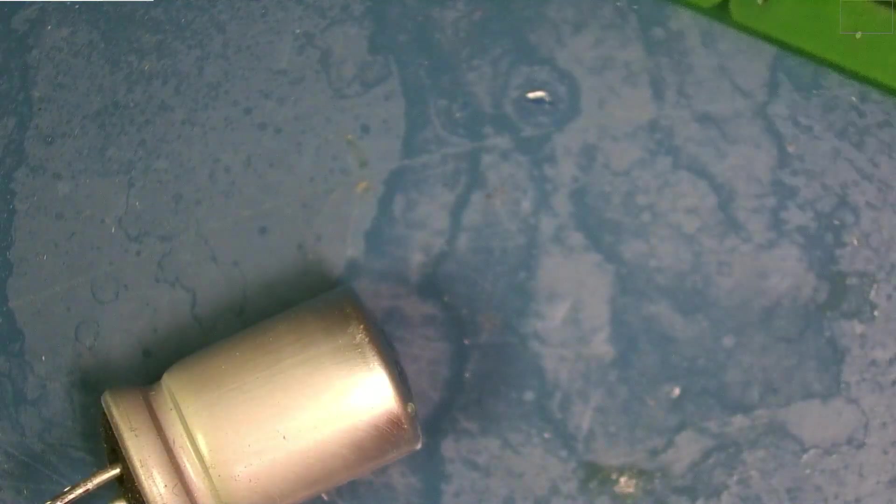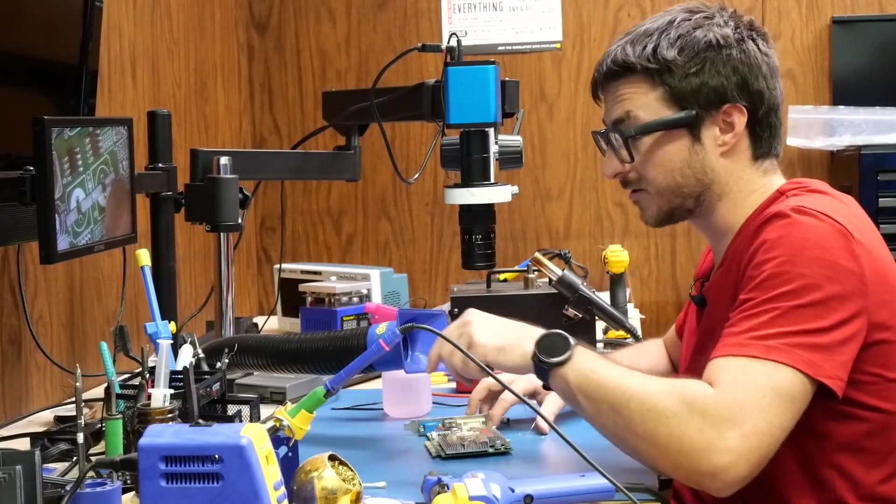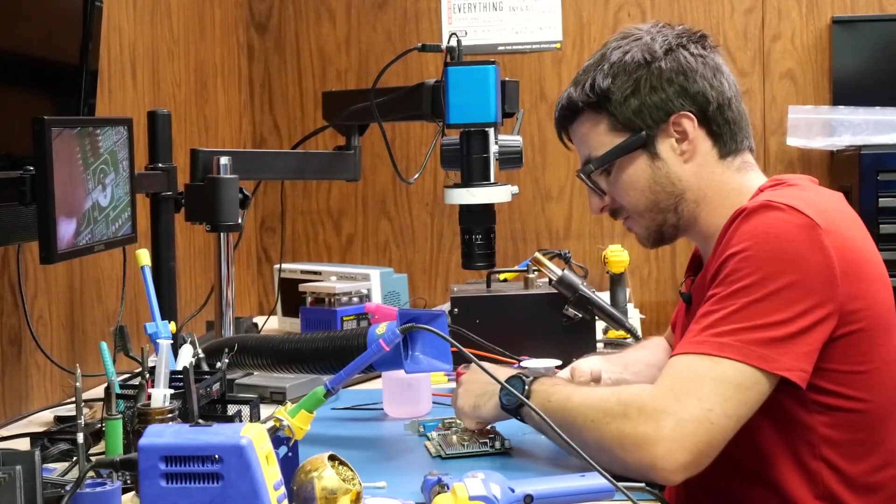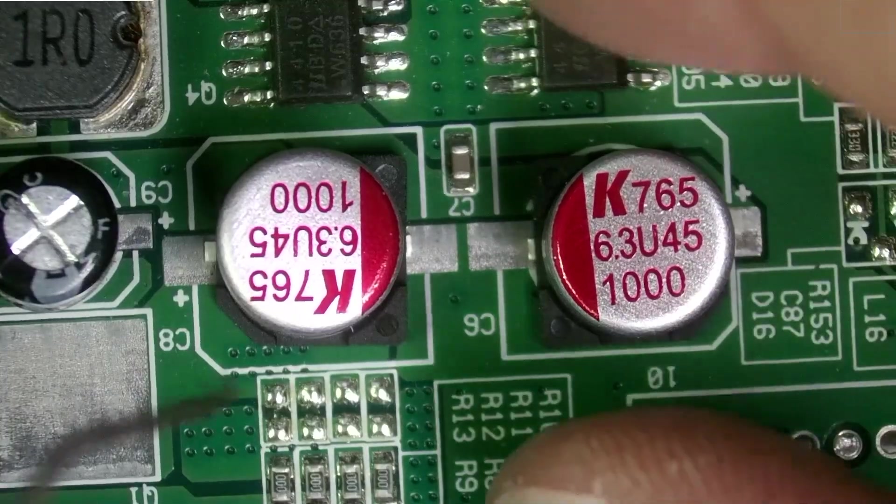Oh, and actually the cap fell out and I didn't even have to use the pump. Because the replacements we're going to be using, we're not even going to be using those holes—they are surface mount—we're going to leave that as is. All right, and both of these were 6.3 volts, 1000 microfarads.